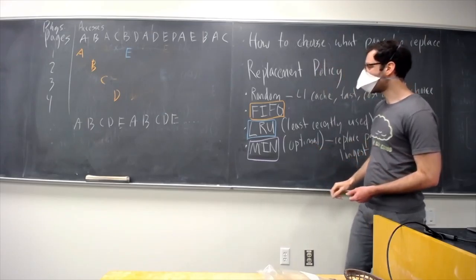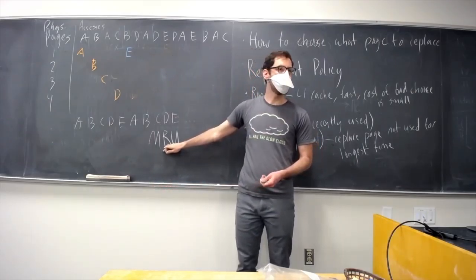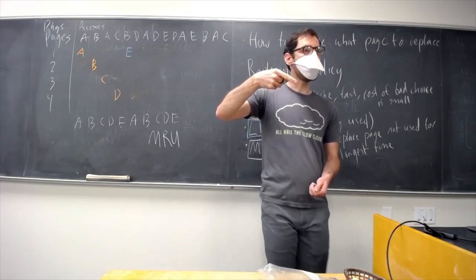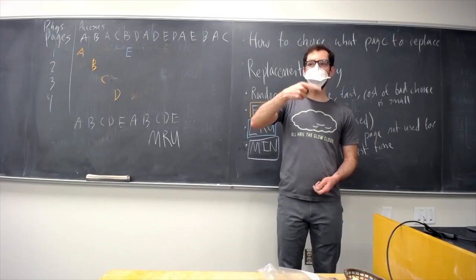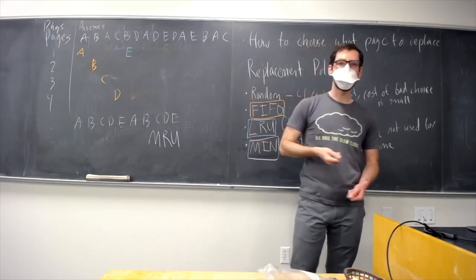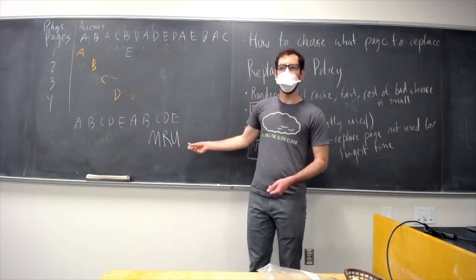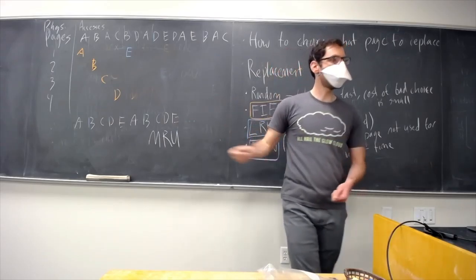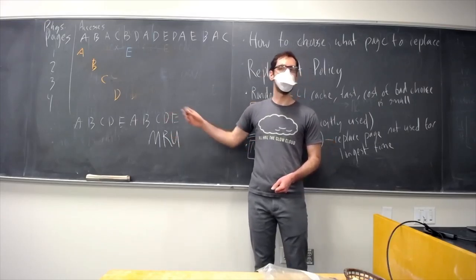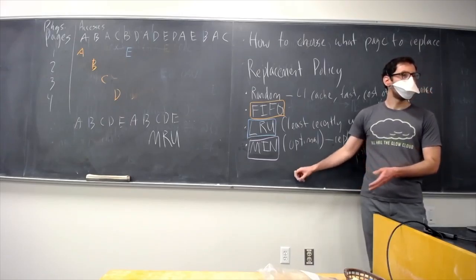What would MIN do on a sequential scan? It would evict the thing used most recently. So while it's counterintuitive, a Most Recently Used policy is actually optimal for the sequential scan, because as soon as you use a page in a loop, the one you just used is the one that will be used farthest away in the future — you'll go through all other pages before getting back to it. You might imagine a sophisticated system detecting a sequential scan and switching to a Most Recently Used policy.